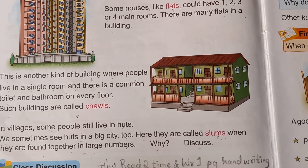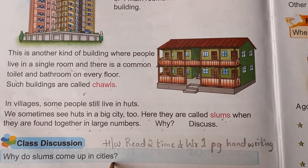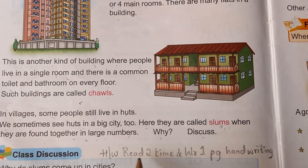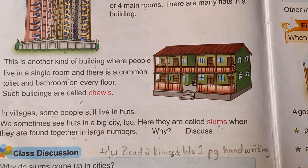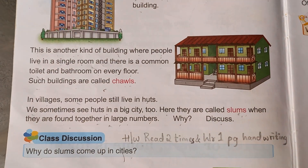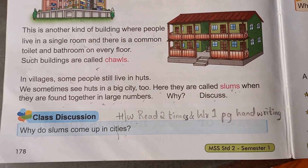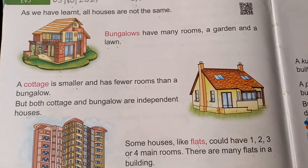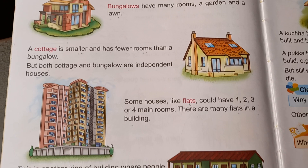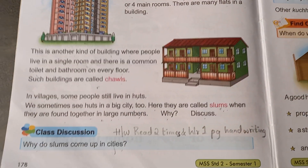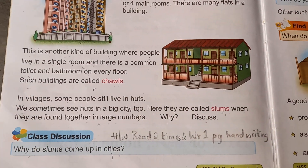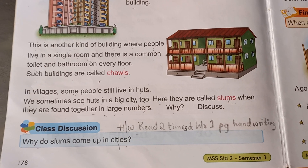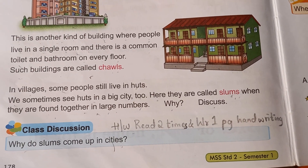There is a question here: why do slums come up in societies? So this we will understand in our next class. Note down your homework children — you have to read this two times and write one page handwriting as given on the blackboard. After this class I will send one separate video clip to you so that you can understand very well what is a bungalow, a cottage, flats, chawl, and why in cities we have slum areas. Okay children, have a nice time. Bye.